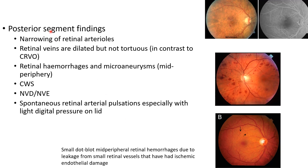Coming to the posterior segment findings, there will be narrowing of retinal arterioles. The retinal veins are dilated but not tortuous, in contrast to CRVO. These are fundus images of ocular ischemic syndrome showing narrowing of retinal arterioles and dilated retinal veins.